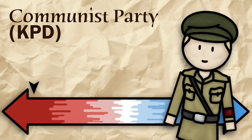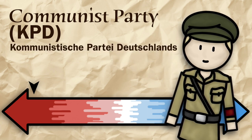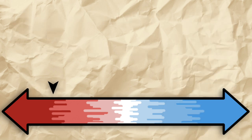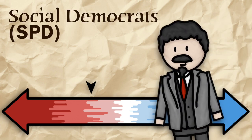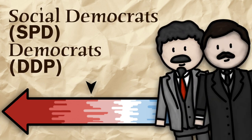KPD is in fact short for Kommunistische Partei Deutschlands, which in English means German Communist Party. There are, however, also moderate left parties, such as the Social Democrats, the SPD, and the Democrats, the DDP.